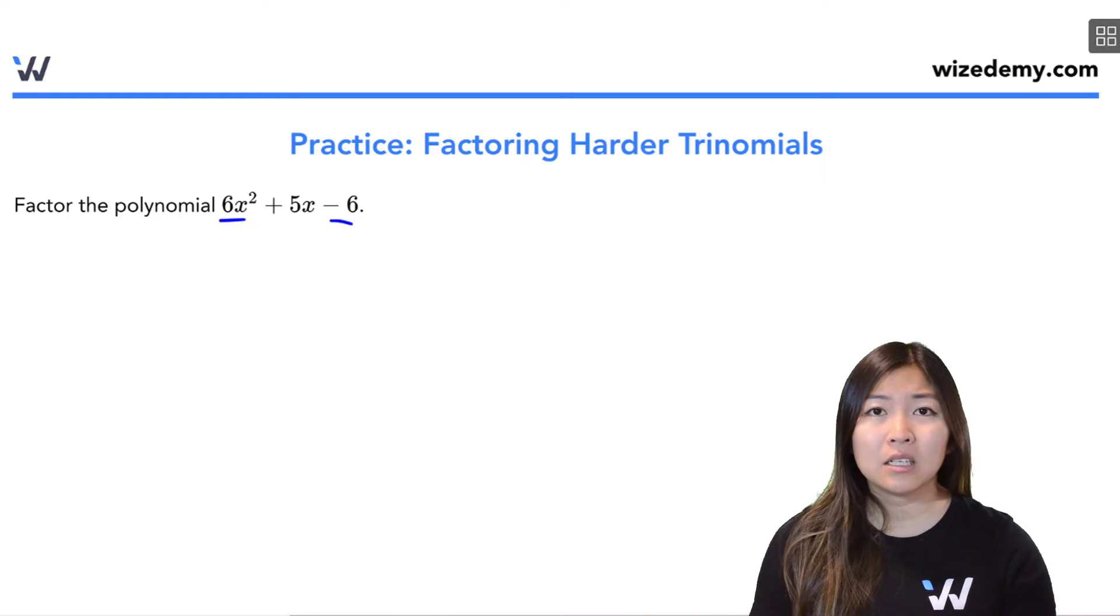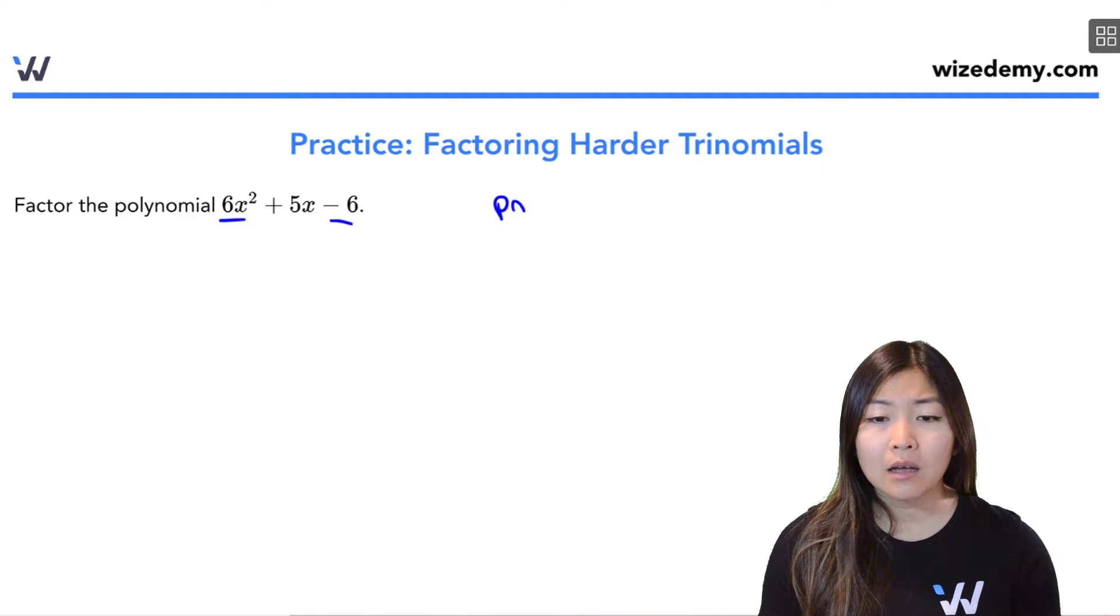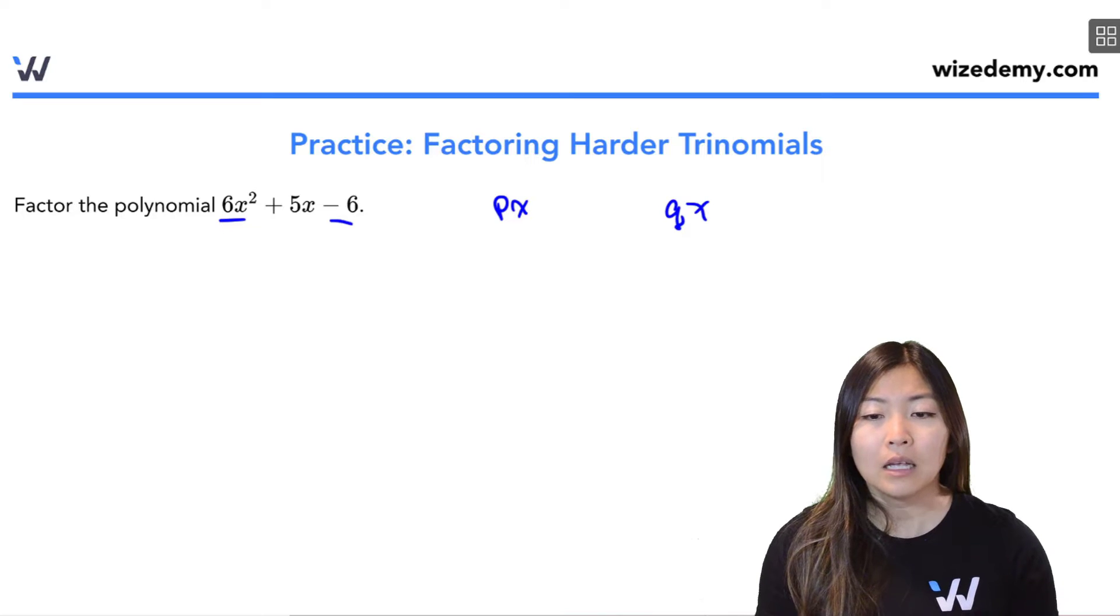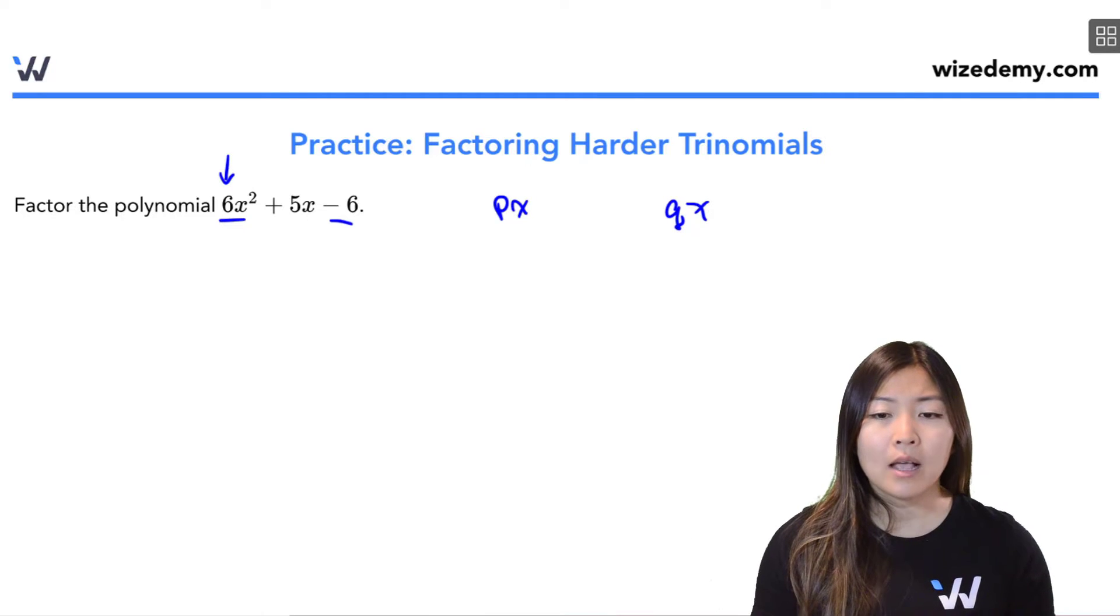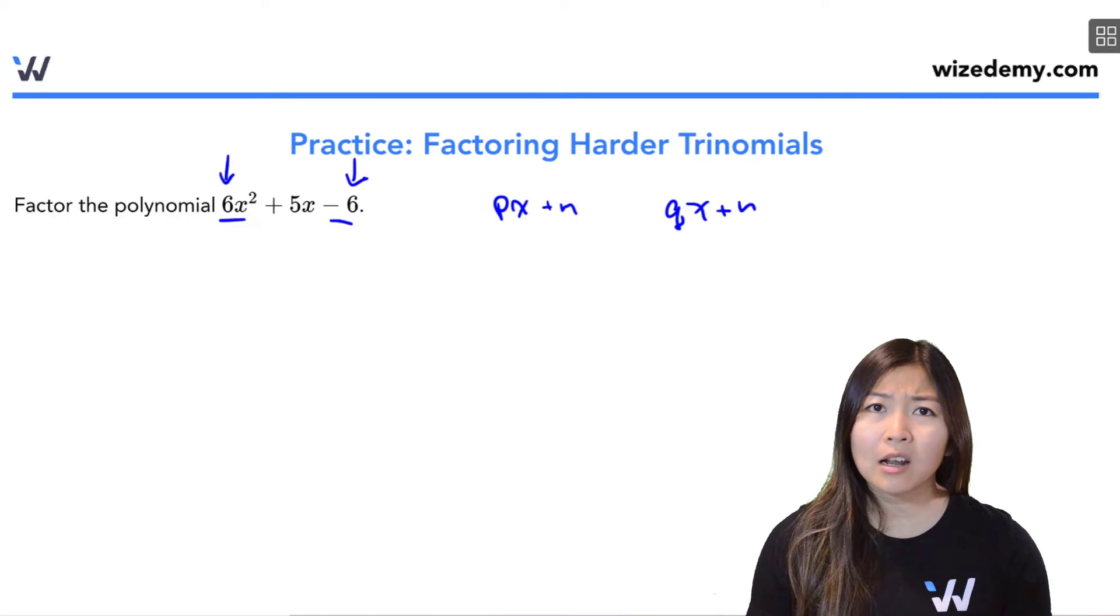So we want to factor the polynomial 6x squared plus 5x minus 6. Now, I know that I'm going to need my px times qx to give me 6x squared, and I'm going to need my m and my n to multiply to negative 6.